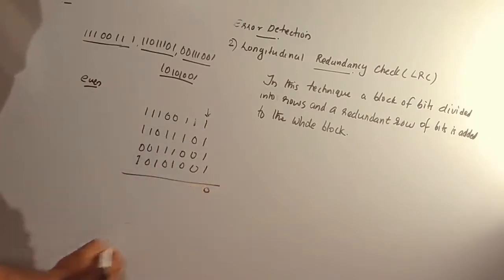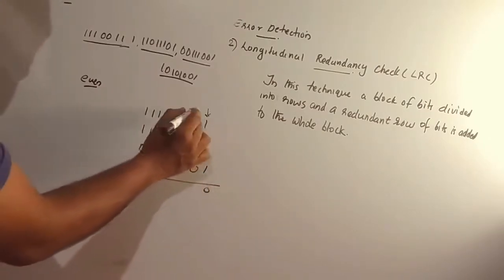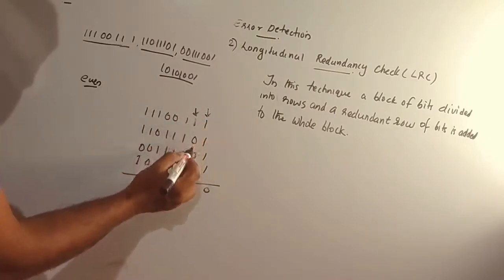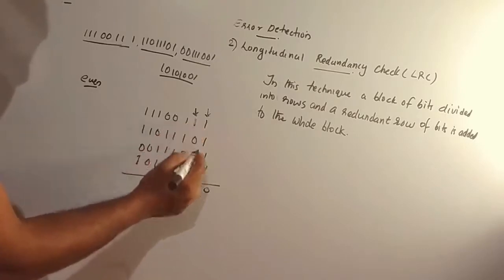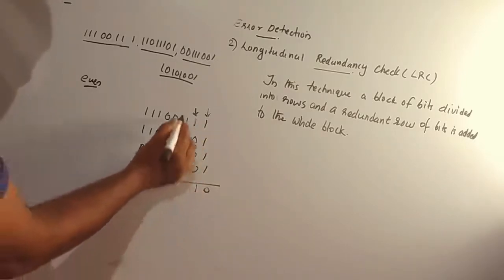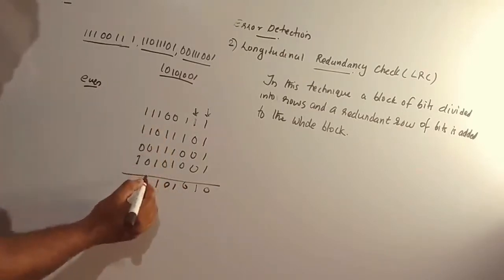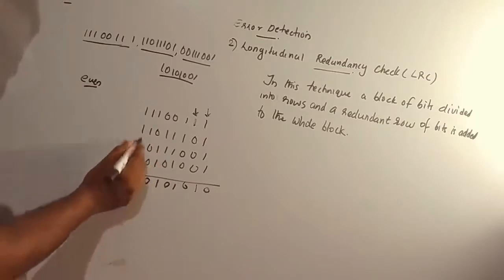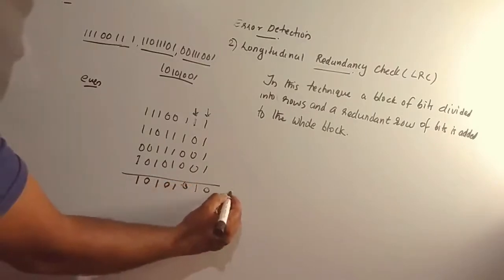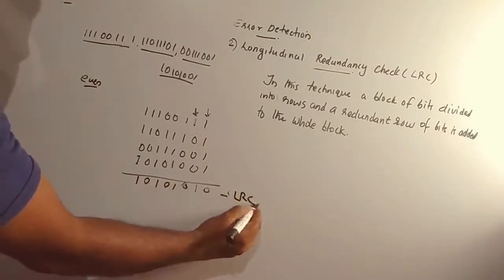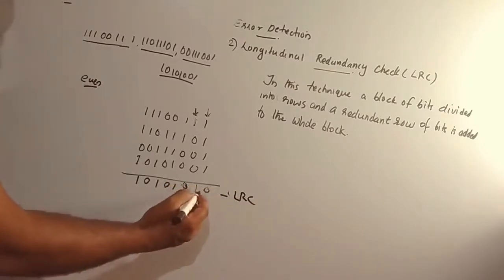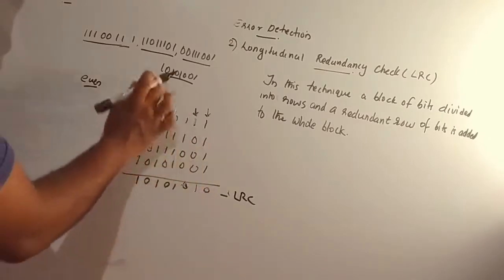Now we count the number of ones. If the number of ones is even, we put 0. If the number of ones is odd, we put 1. This gives us the parity bit for each column: 1, 0, 1, 1, and so on.